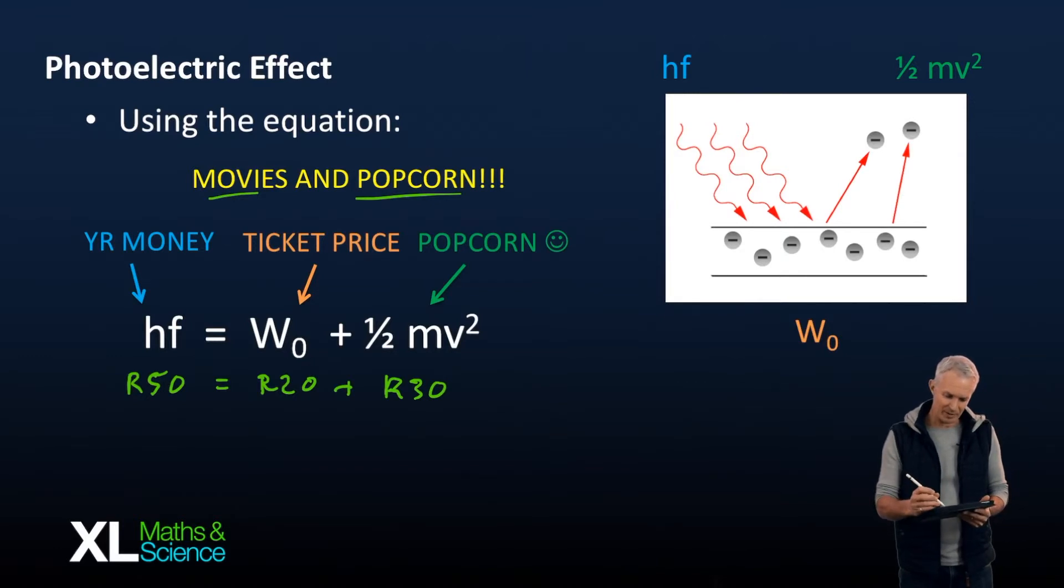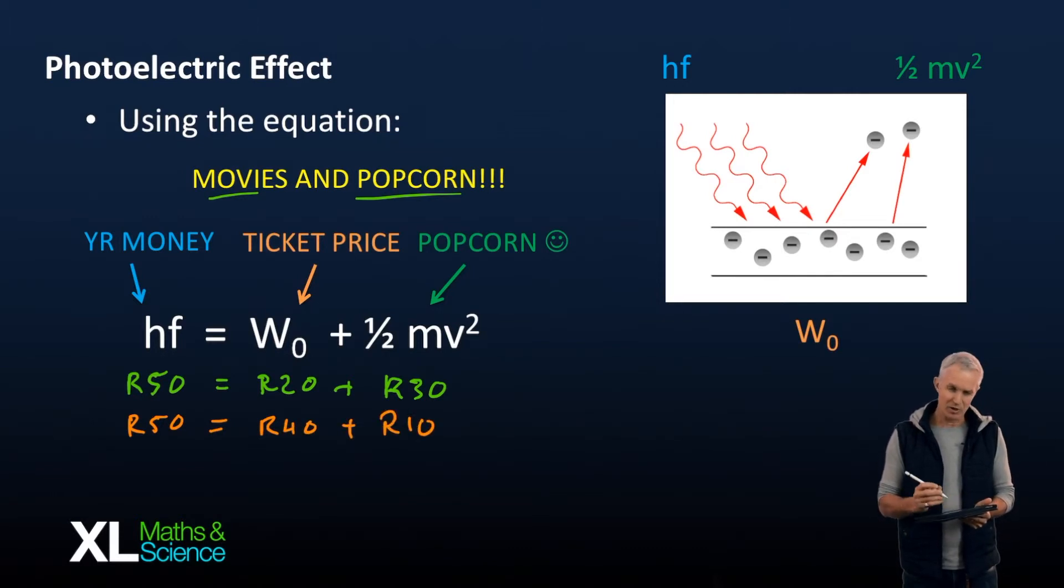Now let's just change the scenario up a little bit. What about if you still had your 50 rand, but the movie ticket was a little bit more expensive than that? Let's say it was a 40 rand ticket. Well, then you've only got 10 rand change, so you can still watch the movie, but you're going to have an itty bitty little popcorn instead of a nice big one.